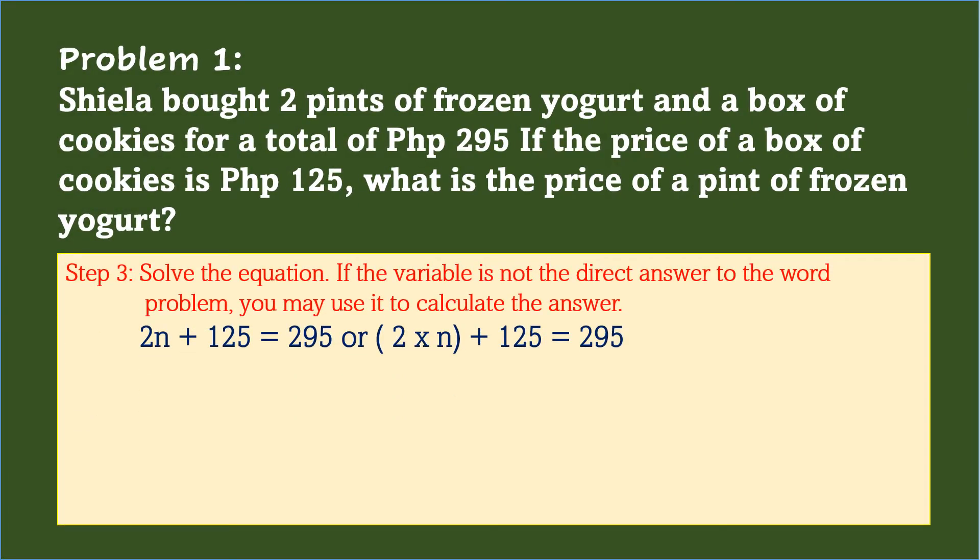After setting the equation, you will now solve the equation. If the variable is not the direct answer to the word problem, you may use it to calculate the answer. In equation 2n plus 125 equals 295, since the total amount is given, you may start working backward. In this strategy, take note that operations will change as you go along the process.